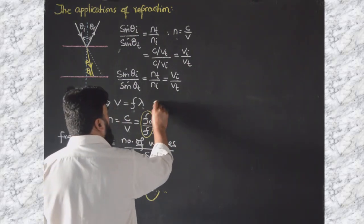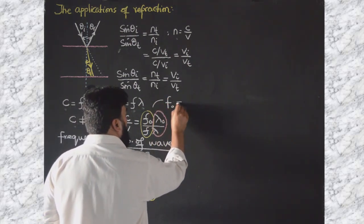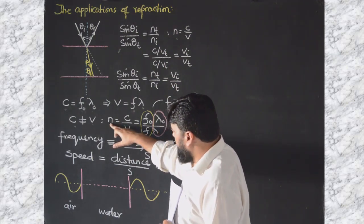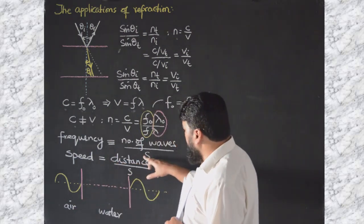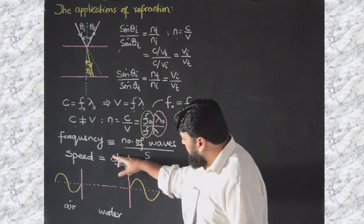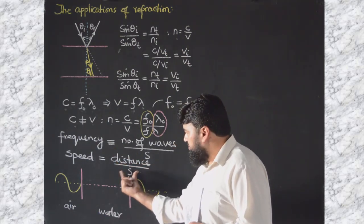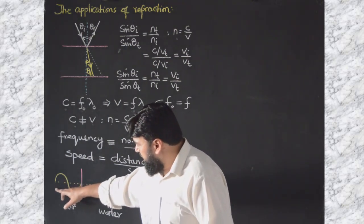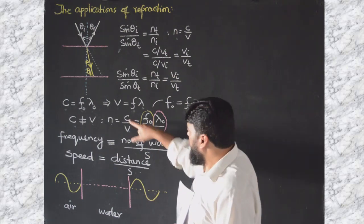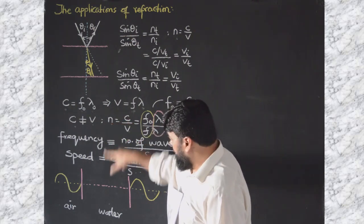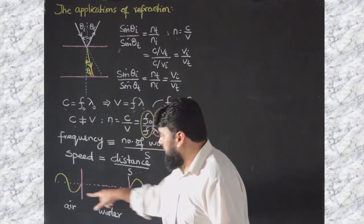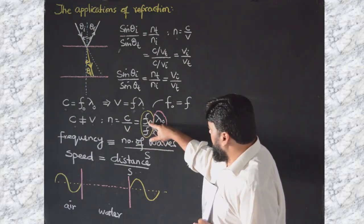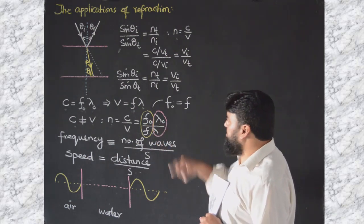So f₀ equals f — frequency is constant. Now, the refractive index n is larger in the medium, so velocity v is different. Since v = fλ and f is constant but v has changed, λ must change. Therefore λ₀ does not equal λ — the wavelength inside the material is different from the wavelength in free space.